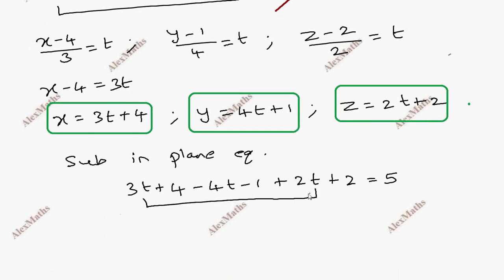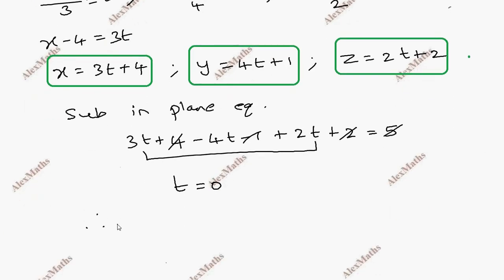Simplifying: 5t minus 4t gives t, and 4 minus 1 plus 2 gives 5. So t plus 5 equals 5, and t equals 0. Substituting t equals 0 back, point C is (4, 1, 2).